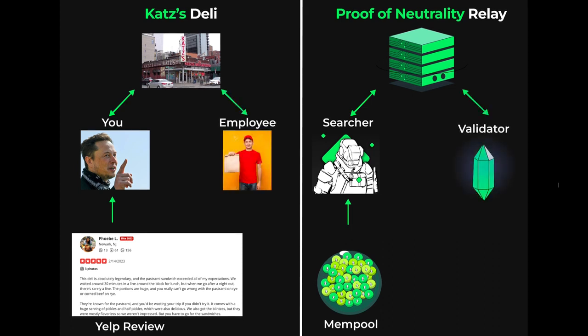The employee who gives you the sandwich can be compared to a validator that uses their validator key to sign and propose blocks to the blockchain. The sandwich shop is a trusted intermediary between the customer and the employee ensuring food safety, just as relays connect block builders and validators in a trusted manner.